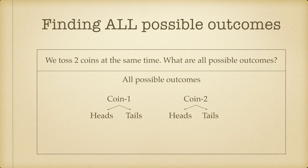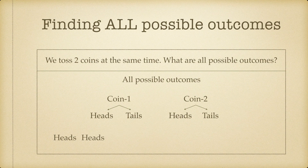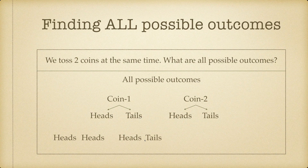We can think of it this way: when we toss our first coin and we get heads, and then we toss our second coin and also get heads — that is our first outcome. Next, we can get heads on coin one and tails on coin two. That is our second outcome.